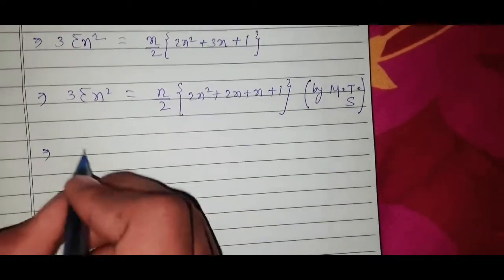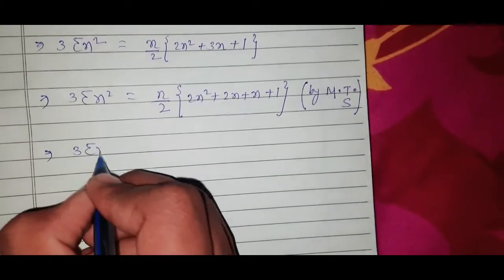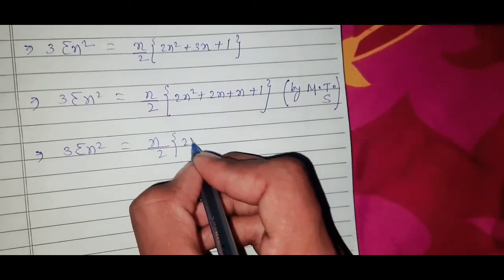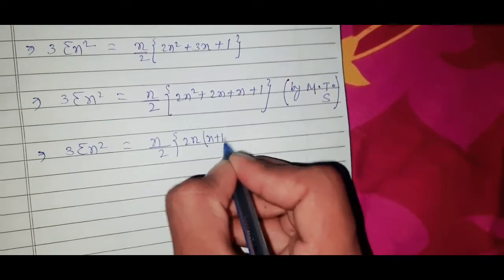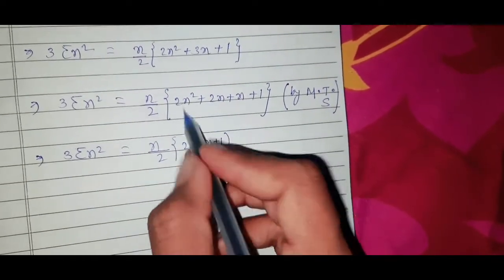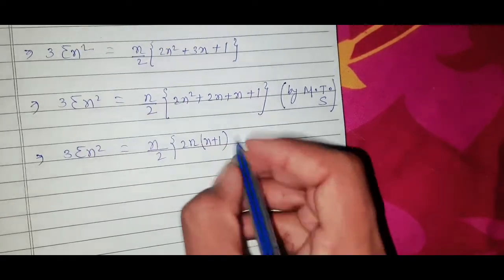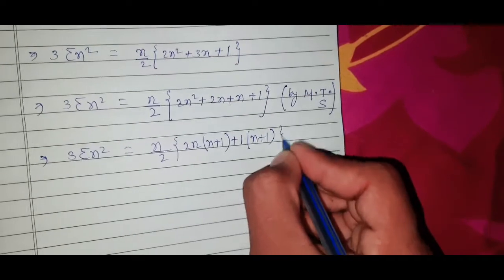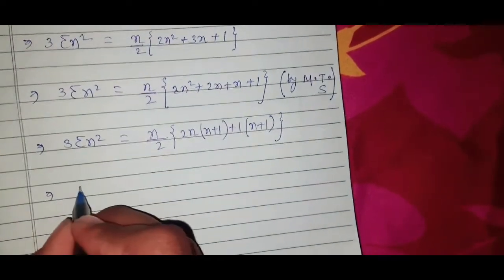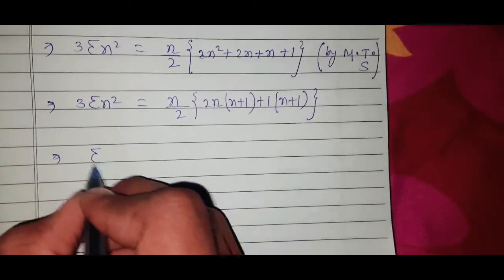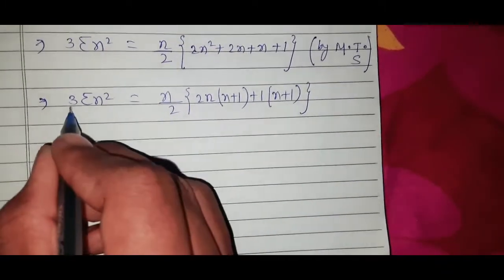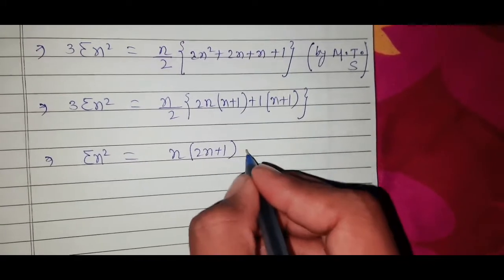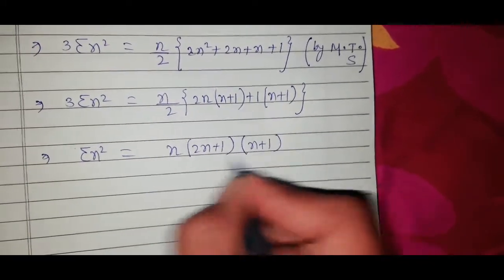So 3·Σn² = (n/2) · (2n+1)(n+1). Dividing both sides by 3 gives Σn² = n(n+1)(2n+1) / (2×3) = n(n+1)(2n+1)/6.